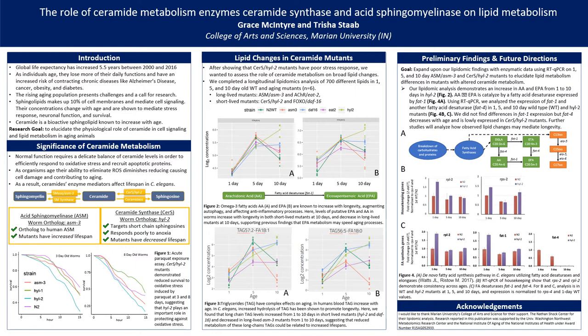We then decided to look at triglycerides, shown here in figures 3a and 3b. Triglycerides are known to increase in concentration in the blood as individuals continue to age. In worms, increased triglyceride hydrolysis has been shown to increase longevity. Looking at long chain triglycerides in figures A and B, you'll notice that triglyceride levels were increased from 1 to 10 day in our short-lived mutants, while they decreased from 1 to 10 day in our long-lived mutants. This suggests that a reduced metabolism of these triglyceride chains could be related to an increase in lifespan.